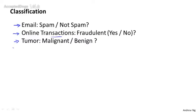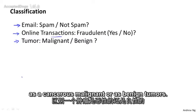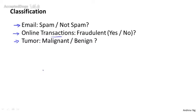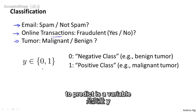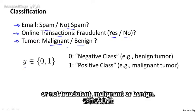And earlier we also talked about the example of classifying tumors as cancerous, malignant or as benign tumors. In all of these problems, the variable that we're trying to predict is a variable y that we can think of as taking on two values, either 0 or 1, either spam or not spam, fraudulent or not fraudulent, malignant or benign.